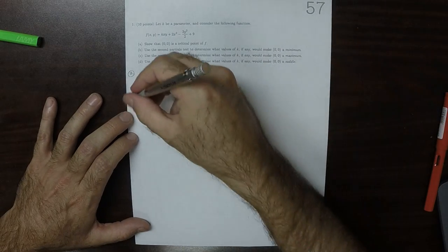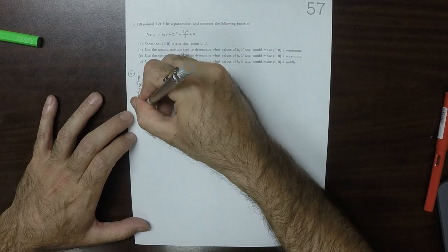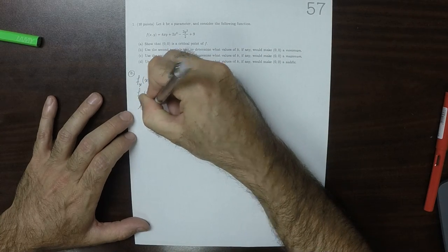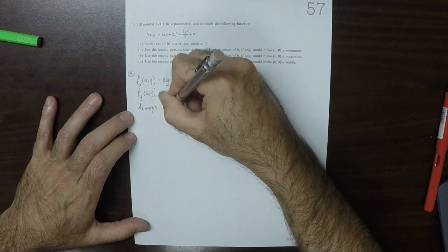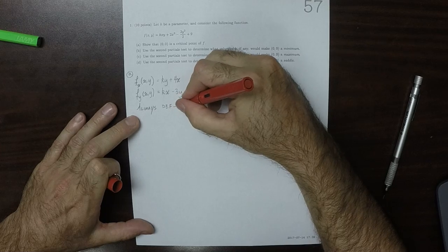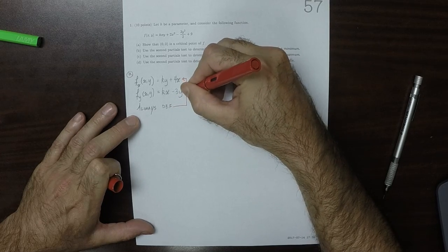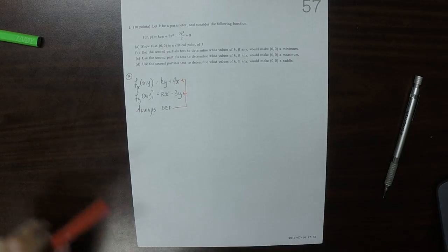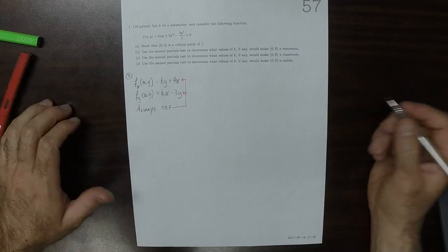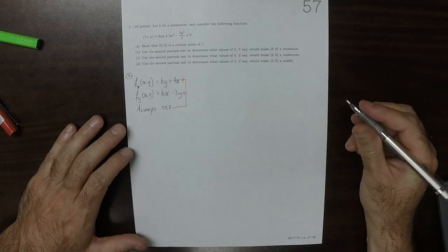And note that these two things are always defined for any x and y. Therefore, the only critical points are going to be when both partials are 0.